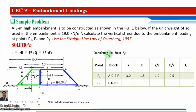Considering point P1, we extend a vertical line upward. The green polygon on the left side is ACEF, and the blue polygon on the right side is also identified. For the green polygon ACEF, the width b = 1.5 m. The value of a is calculated as 1.5 + 1.5 = 3 m, since the slope is 1:1 and depth is 3 m. Thus a/z = 3/3 = 1.0 and b/z = 1.5/3 = 0.5.